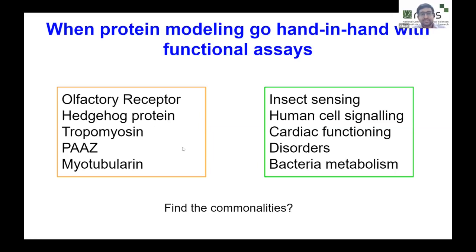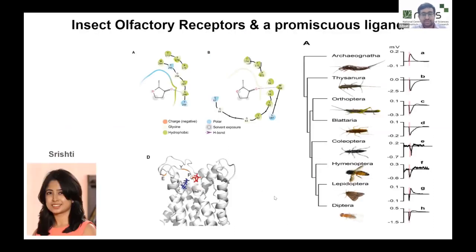These proteins are involved in several processes such as insect sensing, human cell signaling, cardiac functioning, some disorders, and one is involved in metabolism in bacteria. Among several collaborative efforts, we'll first focus on insect olfactory receptors, where Dr. Srishti Batra did her PhD from Professor Shannon Olson's lab at NCBS, working on electrophysiological studies on olfactory receptors from several insects.